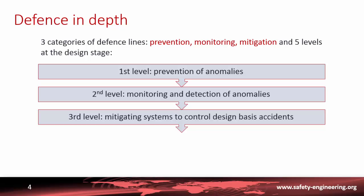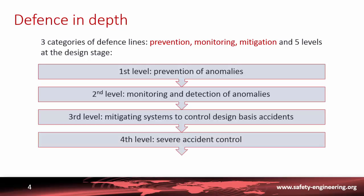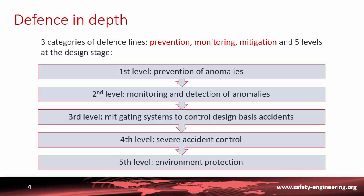The fourth level: if the accident occurs and the safety systems designed to control it fail or are not sufficiently efficient, there is a fourth level to control the development of severe accidents — that is, to control accidents that turn into core melting and to avoid the release of radioactive material outside the containment.